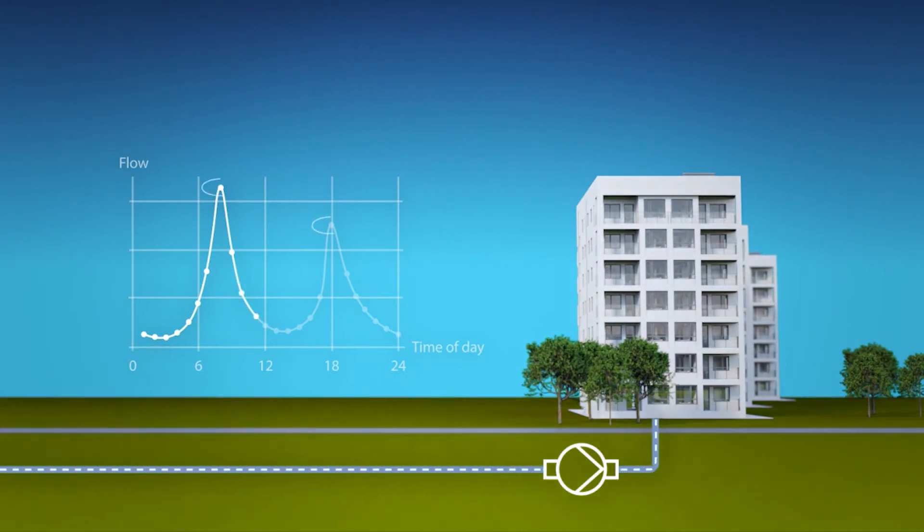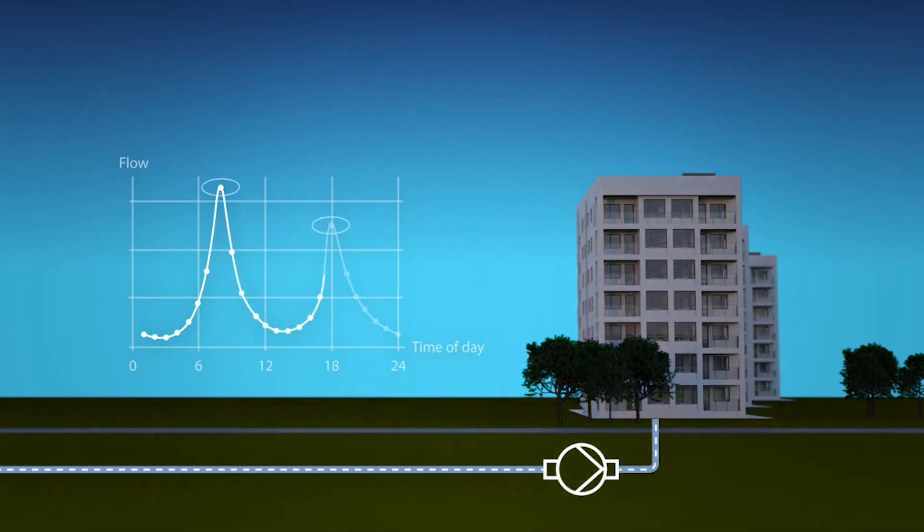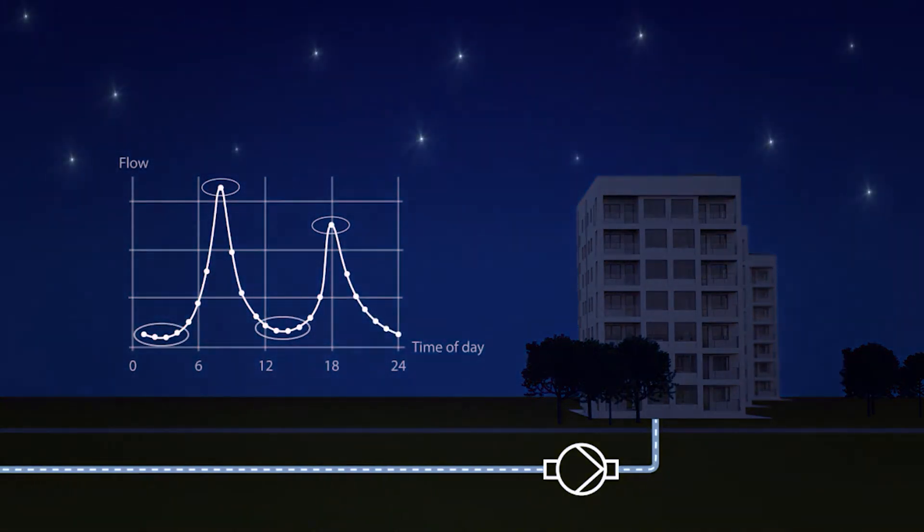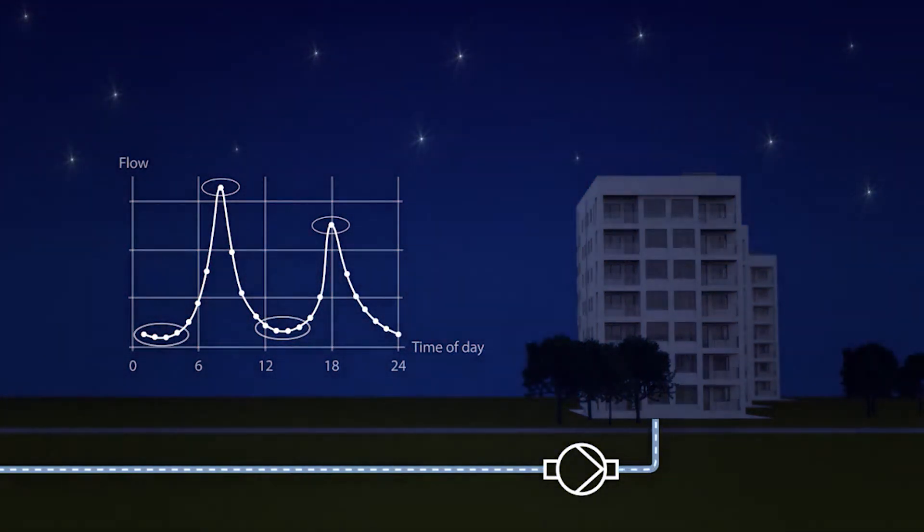At high flow, the pressure is kept constant. However, in periods of low flow, the stop function sets in, shutting down the last pump in operation to save energy.